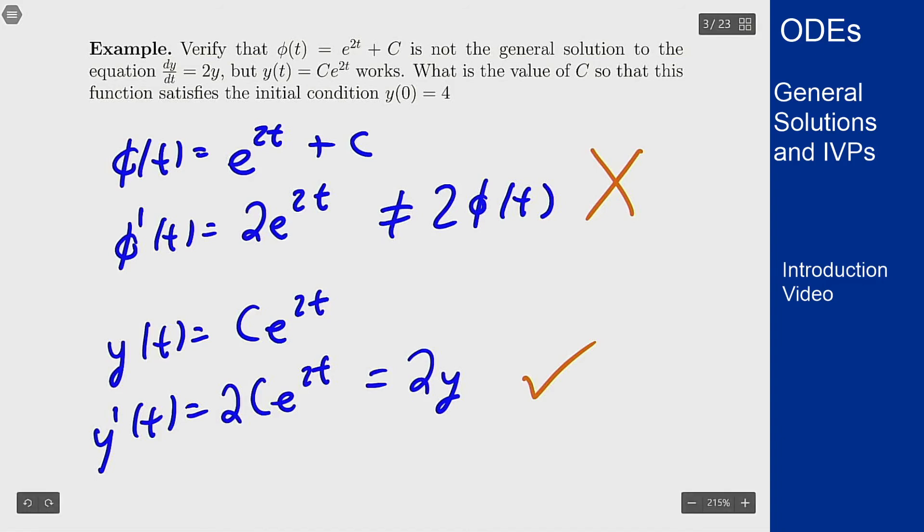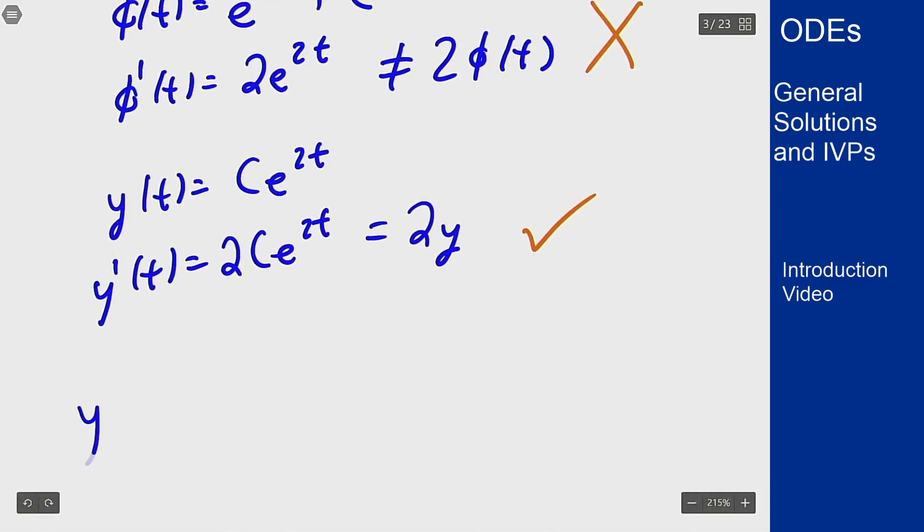So now if I want to solve y(0) = 4 all I will do is plug in 0 and see what that gets me. So y(0) is going to be c times e^(2×0). Well that's e^0 that's 1 this is the value of c. I want this to be 4. This tells me to pick my constant c to be 4.